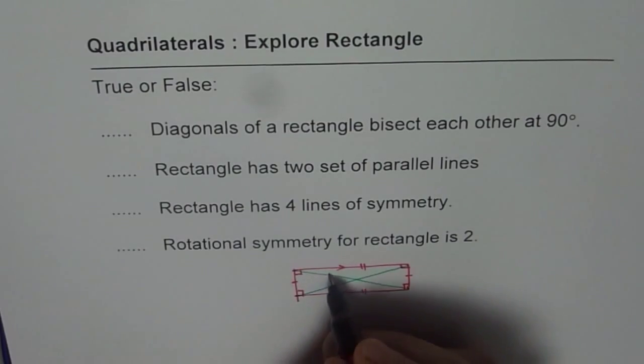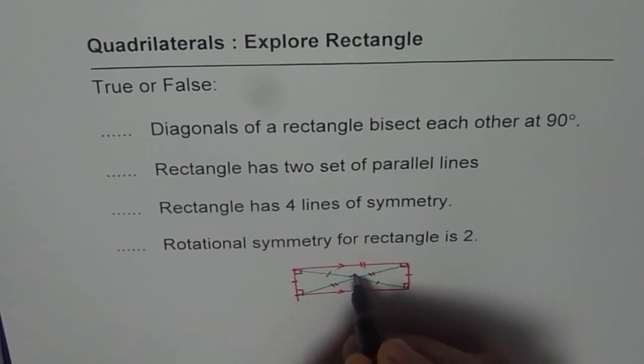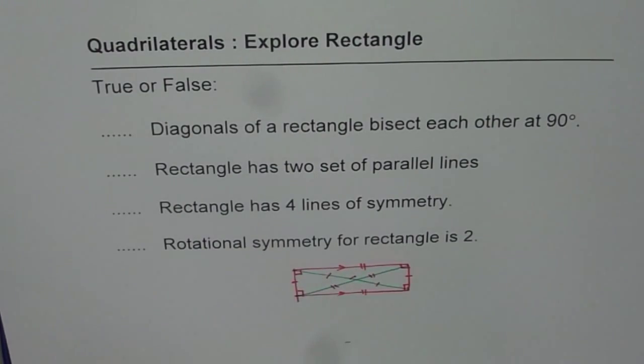So bisect means the sides should be equal. And the angle in between, is it 90 or not? So these angles, are they 90 or not?